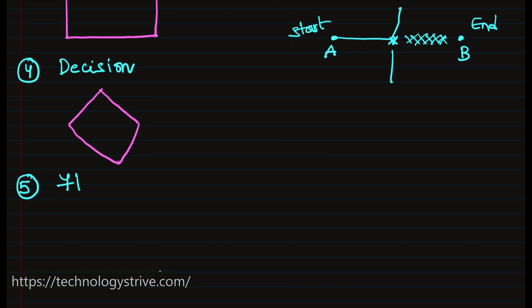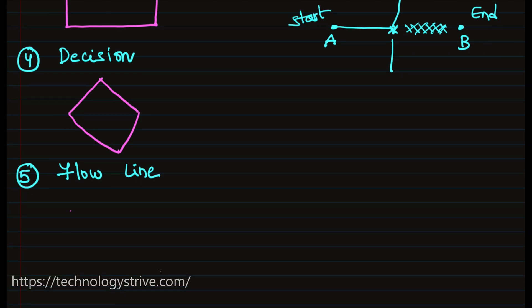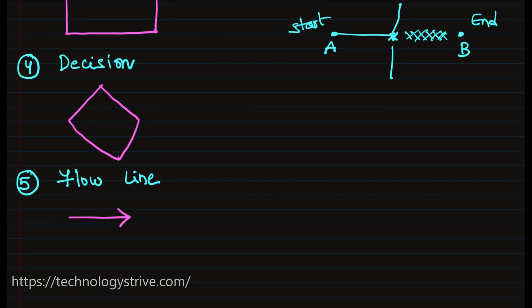The fifth one is flow line. Flow line is used as a connector between these symbols. Arrow is used to represent the flow line. These are the most frequently used flowchart symbols. While proceeding further, if there is any need for different flowchart symbols, we can discuss them at that time.